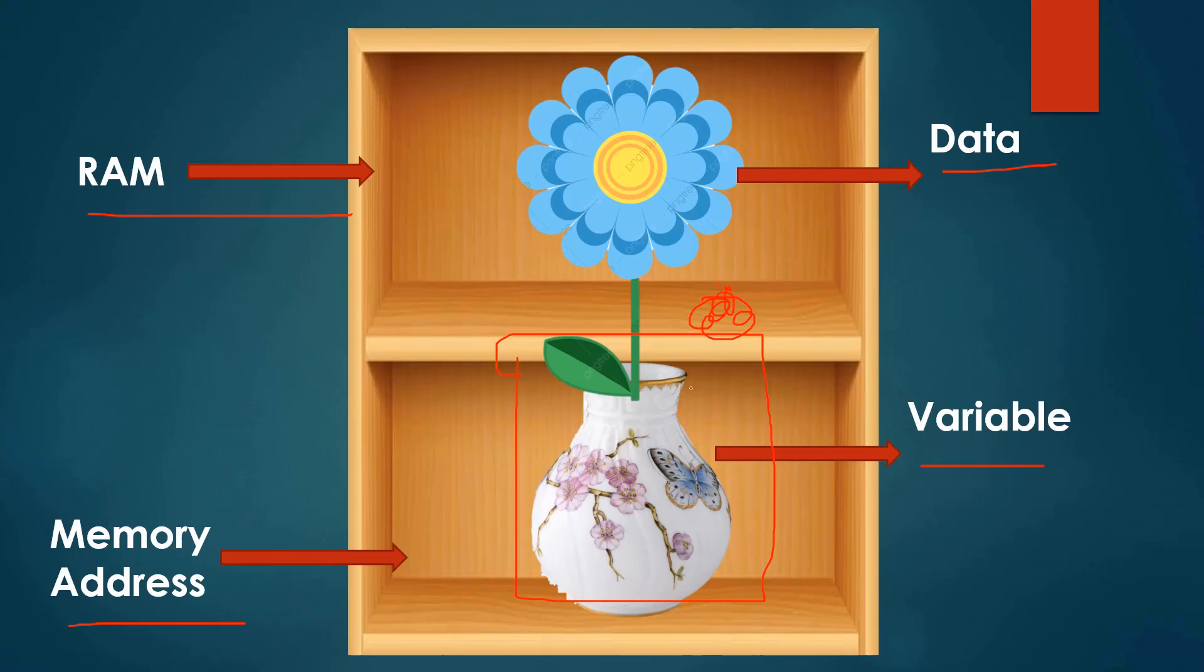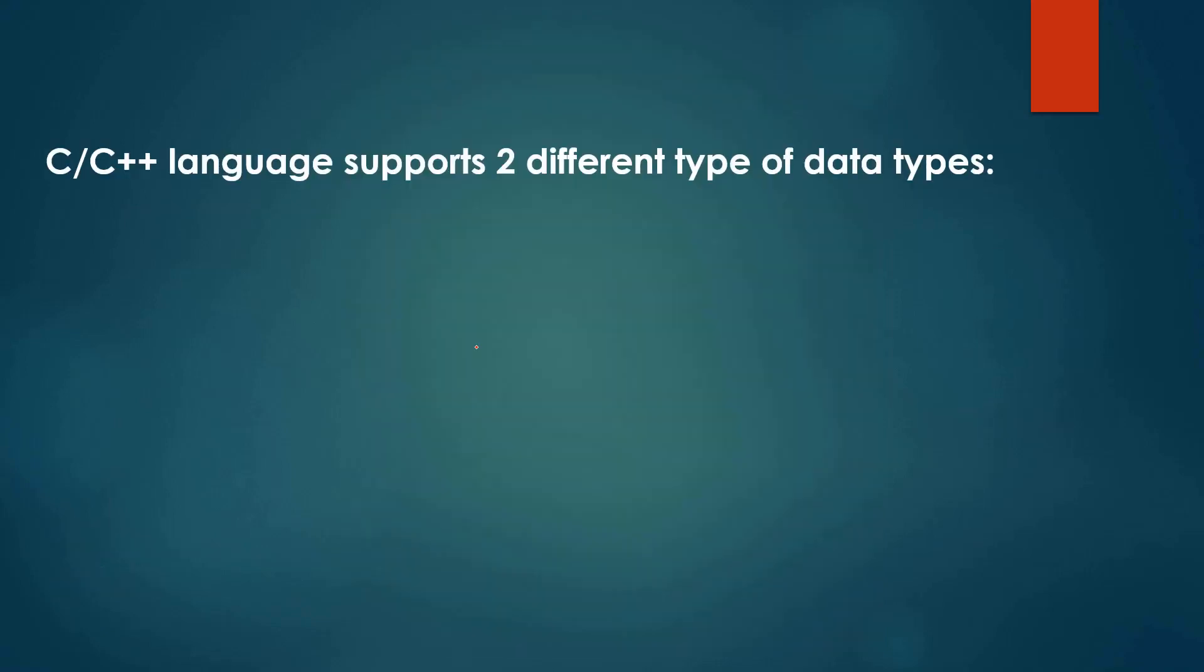So this is the particular example of data type that tells you that this variable is going to store this kind of data. C or C++ language supports two different types of data types.